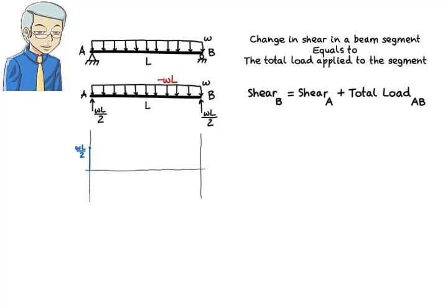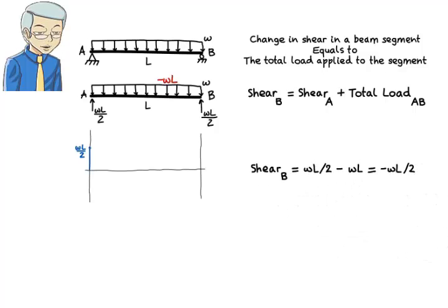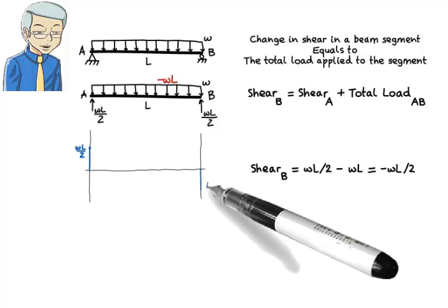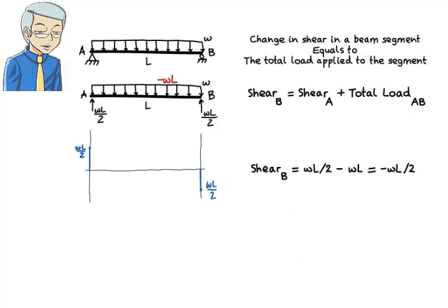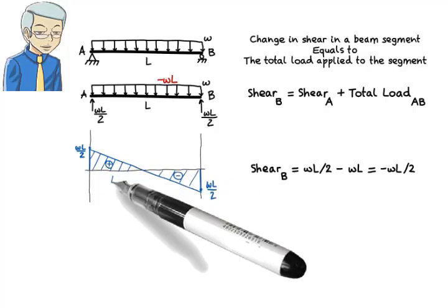Since there is an upward reaction of WL over 2 at the left end of the beam, then shear there is positive WL over 2. Shear at the right end of the beam segment equals to the shear at the left end plus the area under the load diagram between the two points. Therefore, shear at the right end is WL over 2 minus WL, or negative WL over 2. Now that we know shear at either end of the segment, we need to draw the curve representing shear within the segment. Since the load is constant throughout the beam segment, then we draw a straight line connecting the two points. That is, shear is linear in the beam.